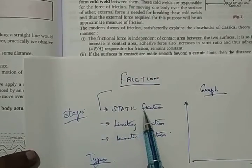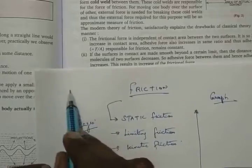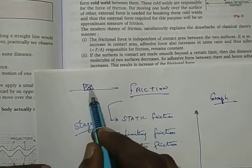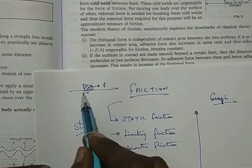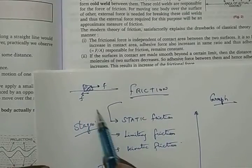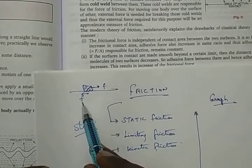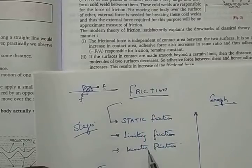The first stage is static friction. Whenever you give a force to a body — you just start giving a force — immediately a friction will start, and that is static friction. When the body is not yet moving, but still a frictional force will be there because the external force is already acting.